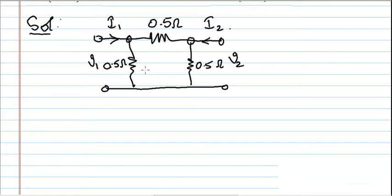Applying KCL at the first node: from Kirchhoff's laws, sum of entering current equals sum of leaving current. The entering current I1 equals the sum of leaving currents, which is V1 by 0.5 plus V1 minus V2 by 0.5.